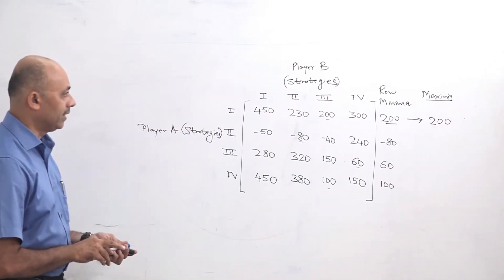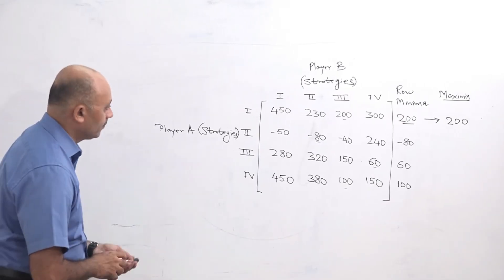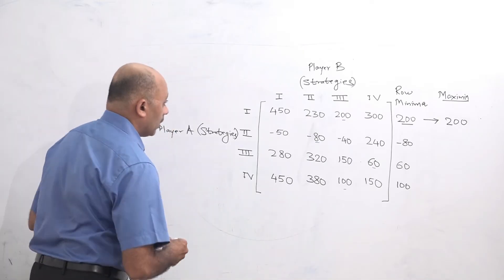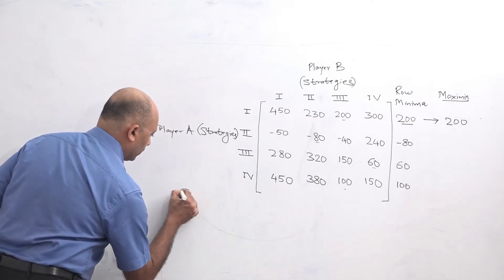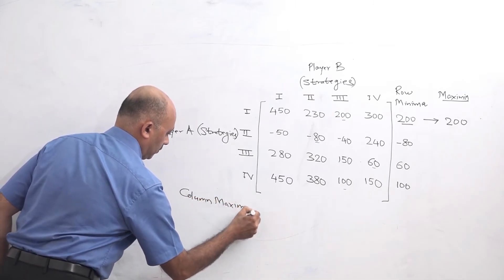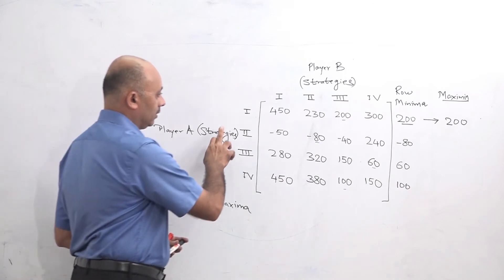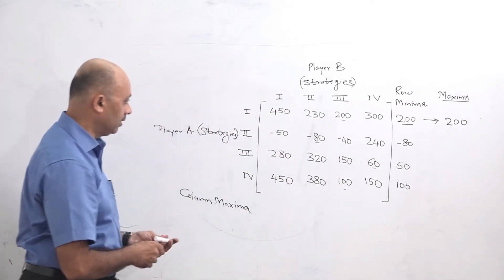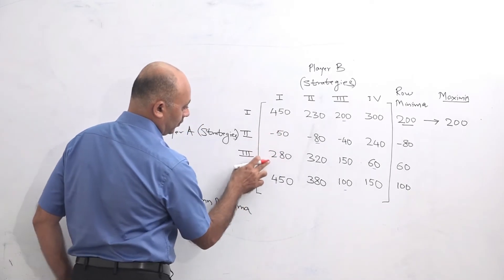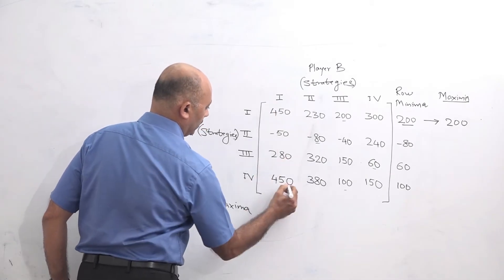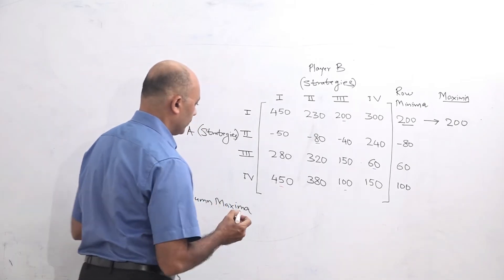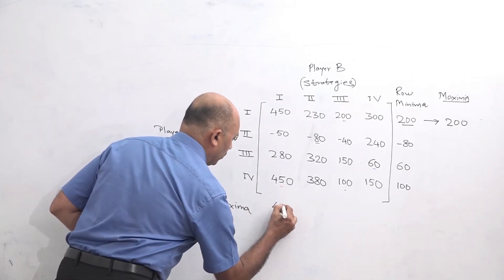Now same way, we will calculate column maxima values. For rows, we were taking the minimum values. For columns, we will be taking the maximum value. Column 1: 450, minus 50, 280, 450. The highest value is 450, so the first column maxima is 450.